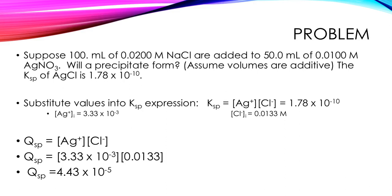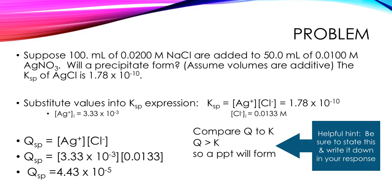We have one thing left to do. We need to compare Q to K. How does Q compare to K? Q is greater than K. 10 to the minus fifth is much larger than 10 to the minus 10. Q is greater than K, which means a precipitate will form. I've got too many ions in solution. I'm going to make some reactants. I'm going to make that silver chloride and it's going to deposit on the bottom.